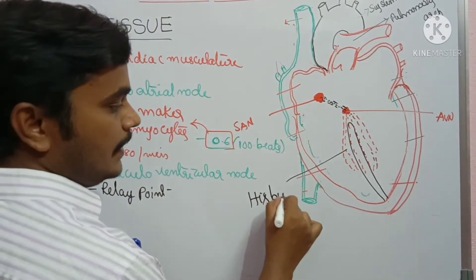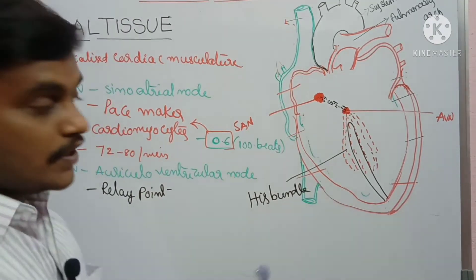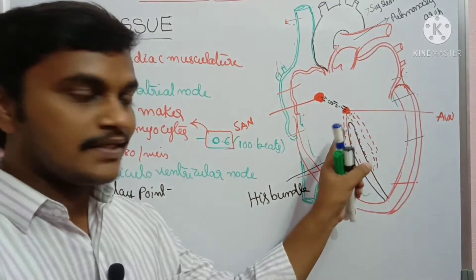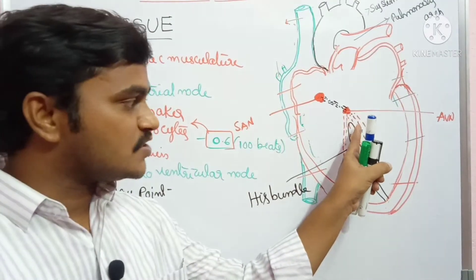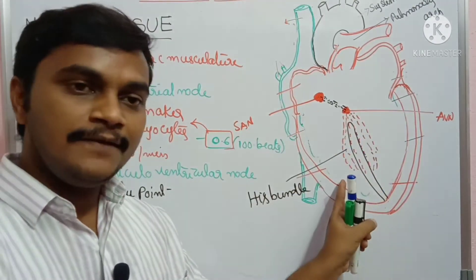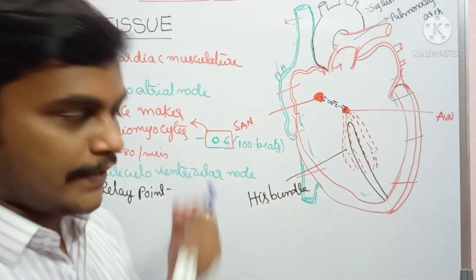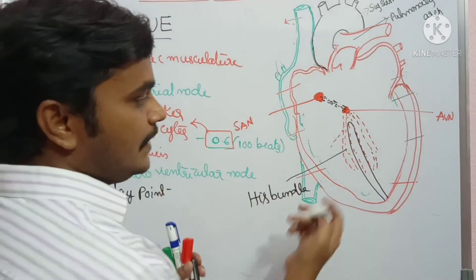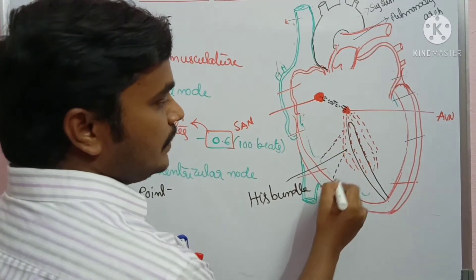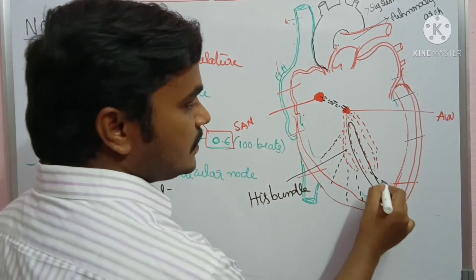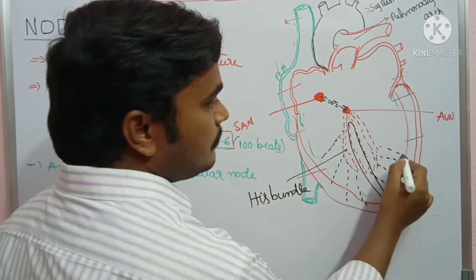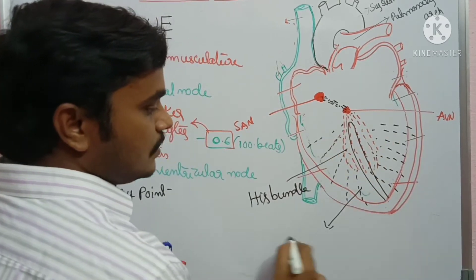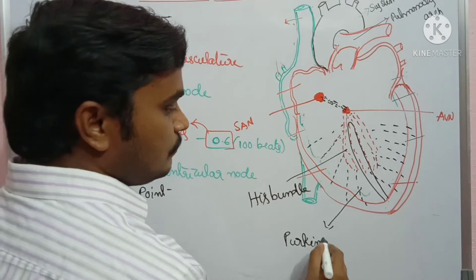From the bundle of His, the action potential is transmitted to the next part — the Purkinje fibers. These Purkinje fibers are attached to the bundle of His and transmit the action potential to the ventricular walls, throughout the ventricular musculature. So the ventricular musculature is activated by the Purkinje fibers.